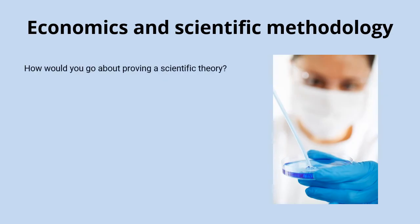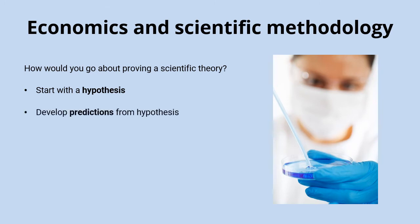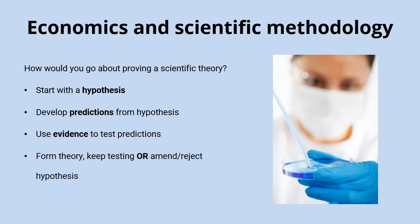There's probably a slightly simplistic way of thinking about what scientists do, but if you wanted to prove a scientific theory, you would start with a hypothesis — a proposition that you believe to be true — and use that to develop predictions about what's going to happen when you change certain variables. Then you'd use evidence to test these predictions, and from that evidence you could form a theory, or keep testing, or amend or reject your hypothesis based on the evidence you've found.